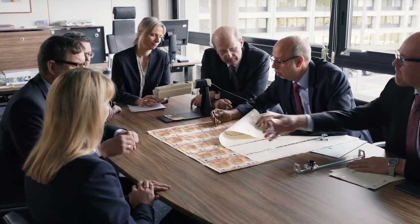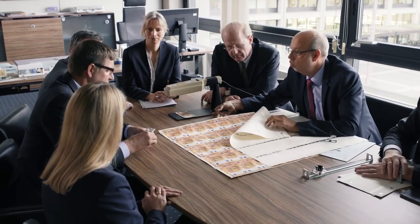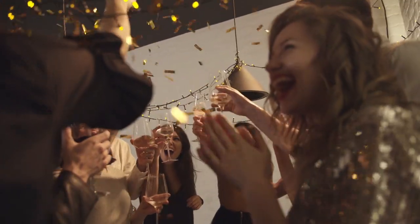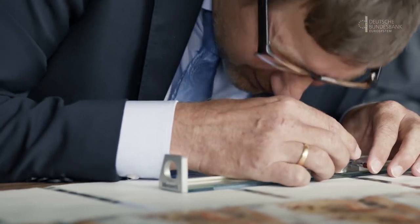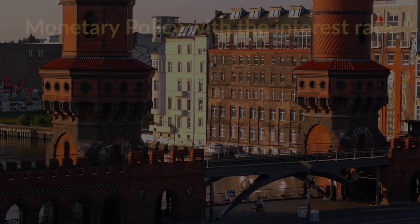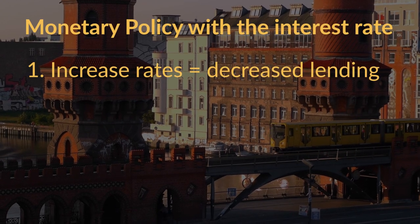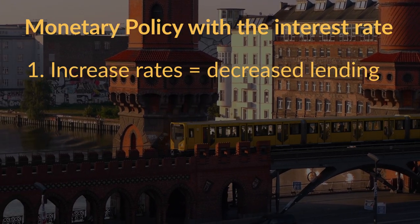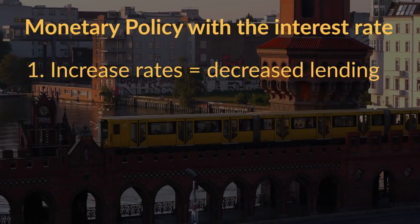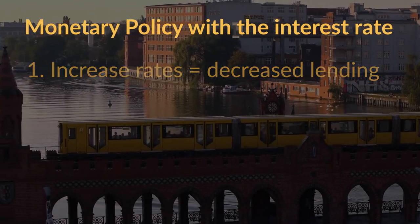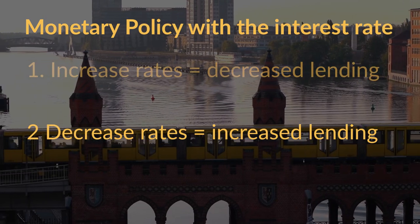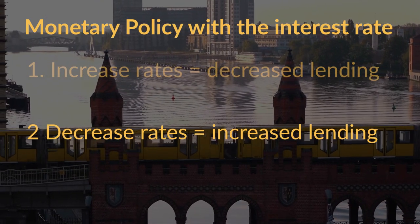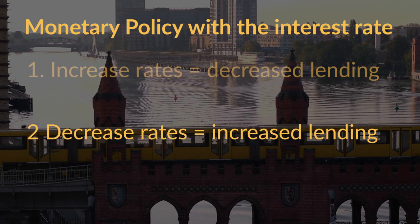Conversely, if the central bank interest rate is very low, commercial banks might feel confident to go on a lending spree. Decreasing or increasing the interest rate — that is what central bankers generally mean by monetary policy. By increasing the rate, banks are discouraged from making loans and from creating new money — this is called monetary policy tightening. By lowering the rate, the central bank encourages bank lending and increases money creation — this is called monetary policy loosening.